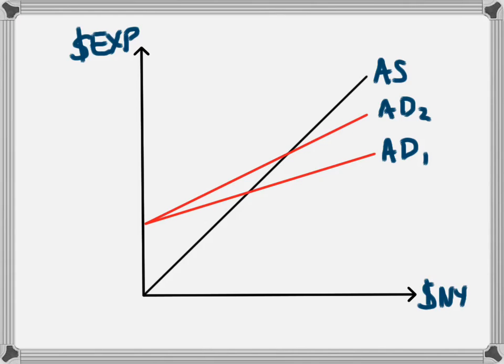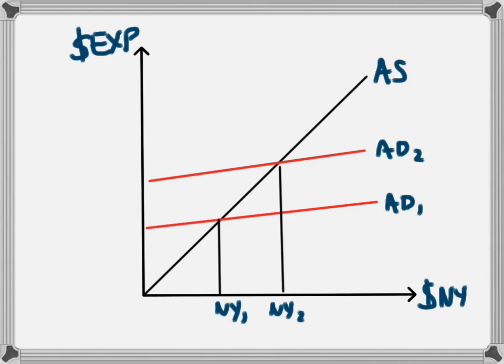In this video, we're going to specifically look at how an increase in the marginal propensity to consume will lead to an increase in the multiplier effect. We're going to start with two relatively flat aggregate demand curves, and they're flat because there is a low MPC — a low marginal propensity to consume. There's been an increase in aggregate demand from AD1 to AD2, and that's led to an increase in national income from NY1 to NY2.